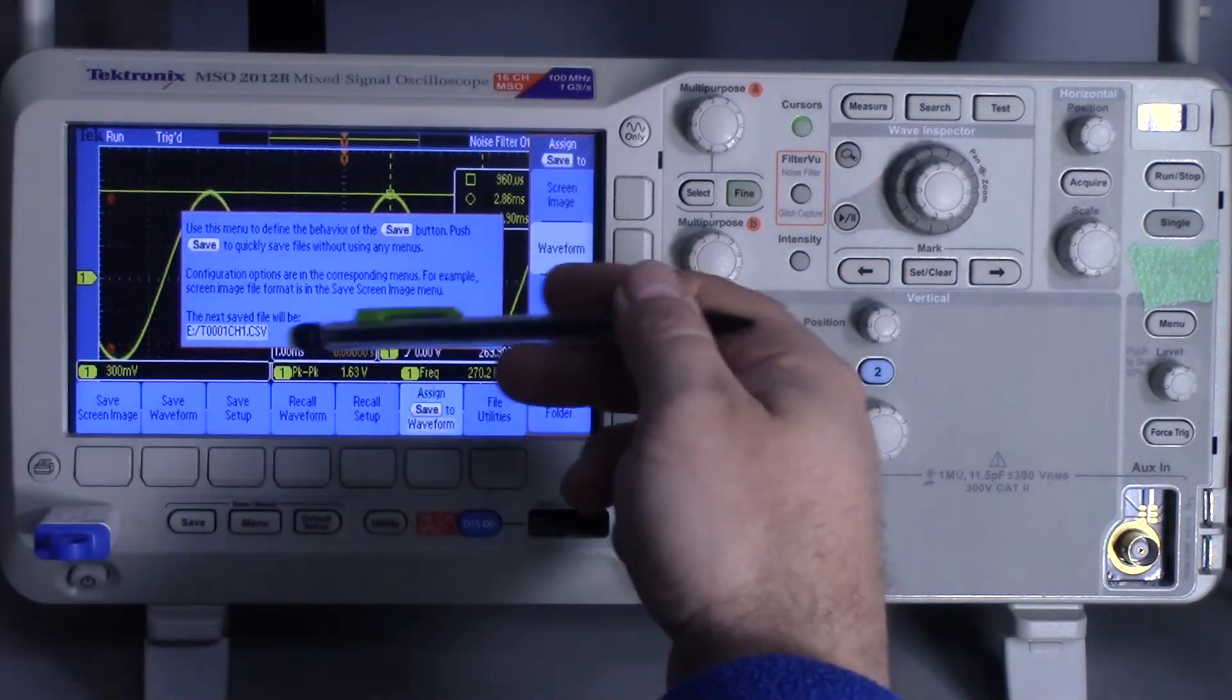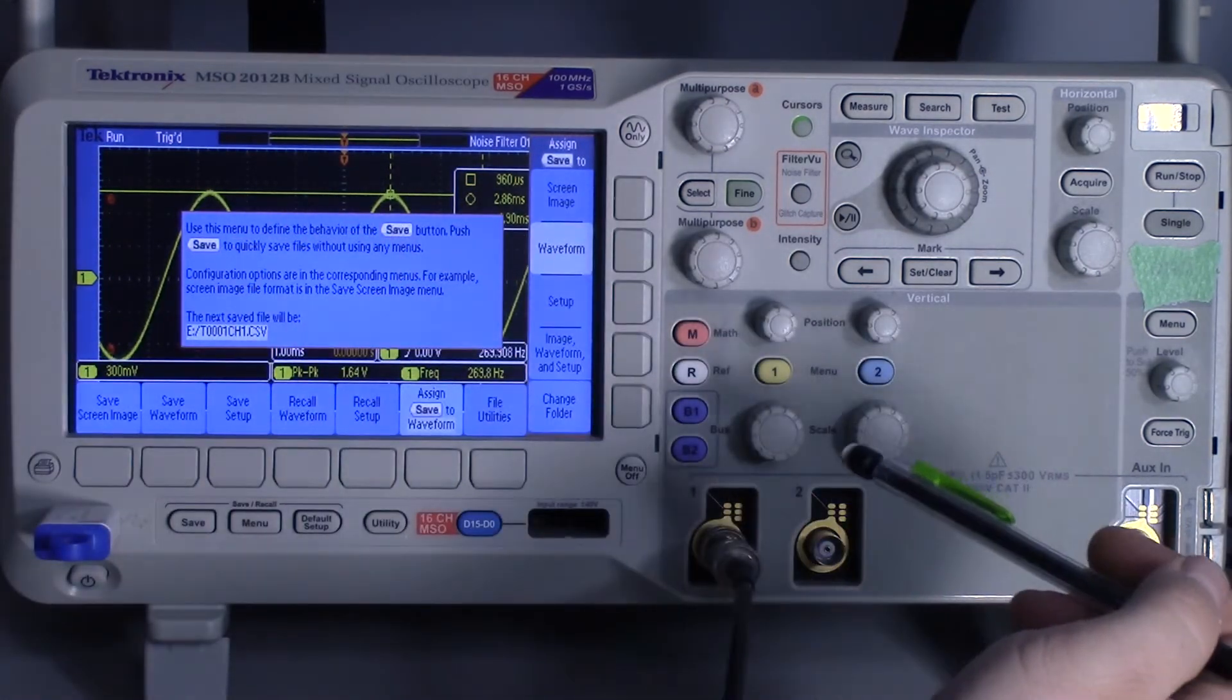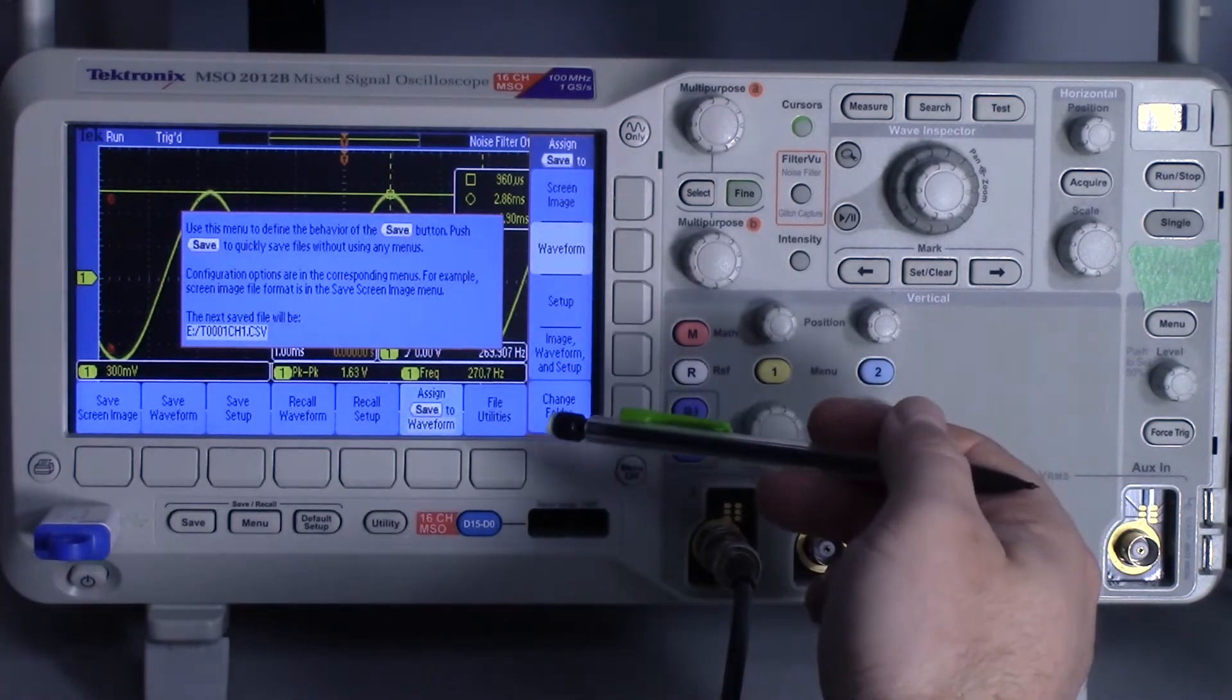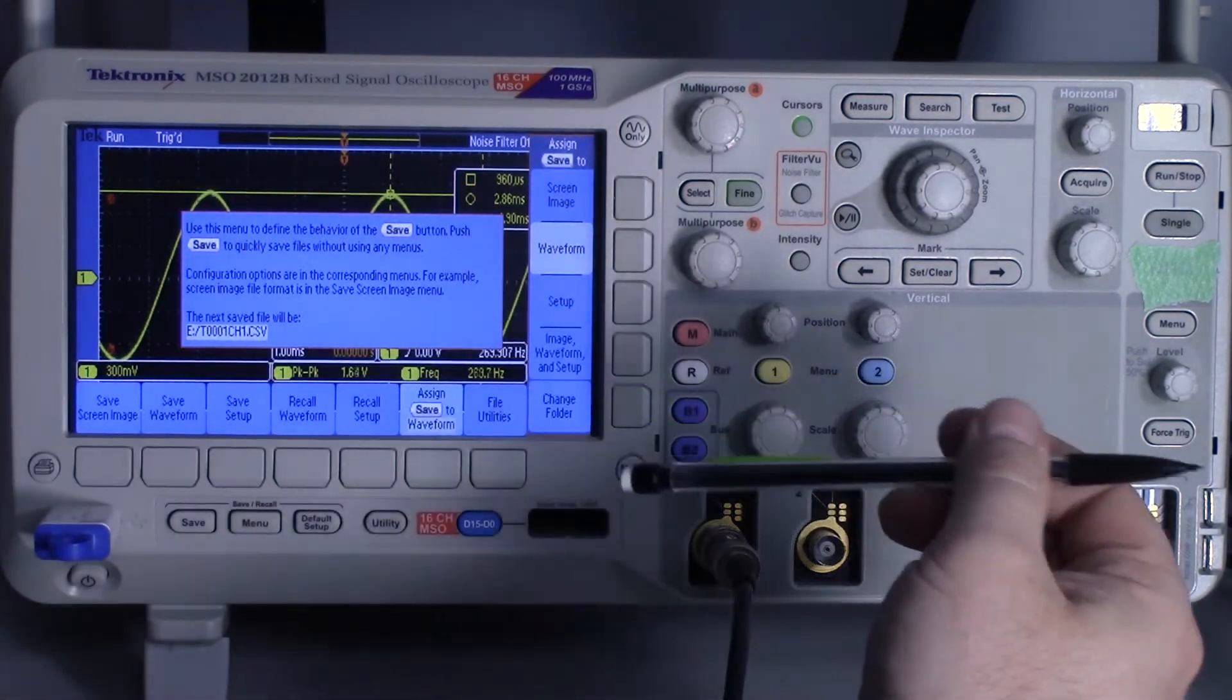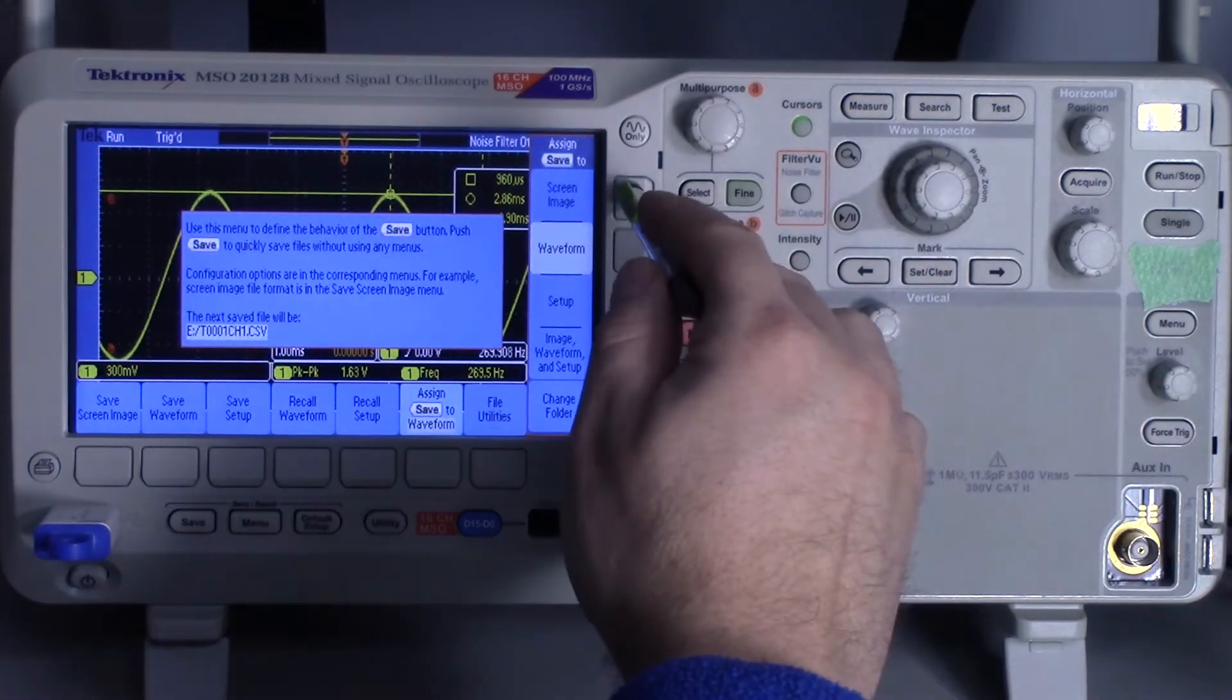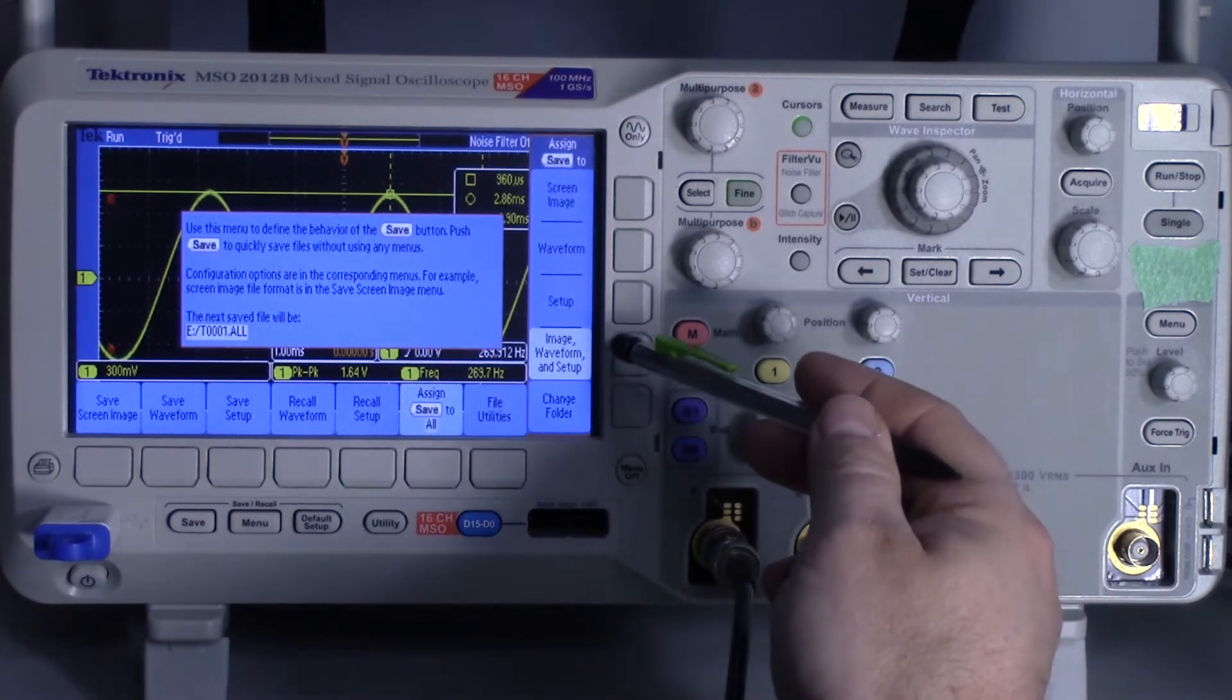You always want to save to your flash drive, because you might save it internally but then you don't know which particular scope you're using in the lab. If you're not sure which one you want, you can always go with the default all.